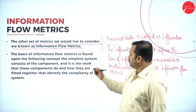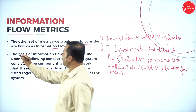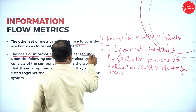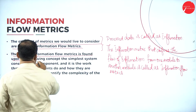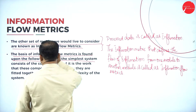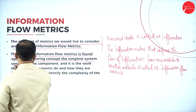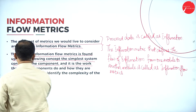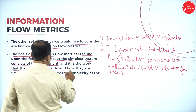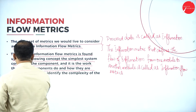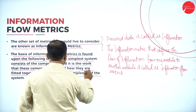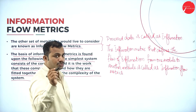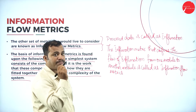On the basis of this information, the information flow matrix is founded upon the following concepts. The simplest system consists of components, and it is the work that these components do and how they are fitted together that identifies the complexity of the system.